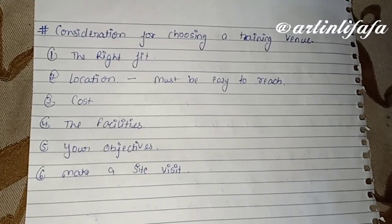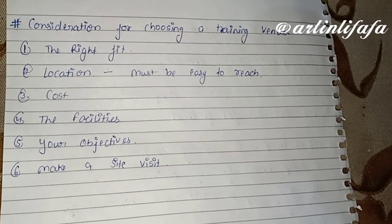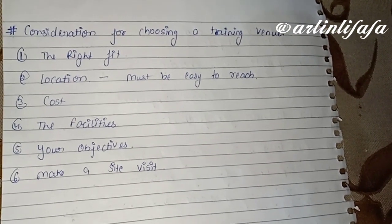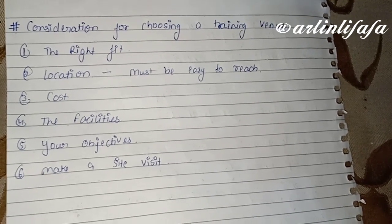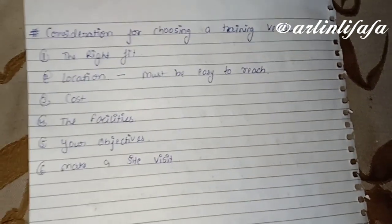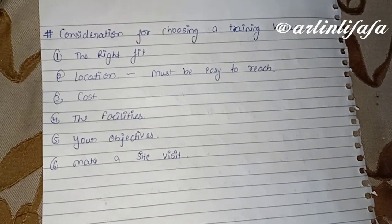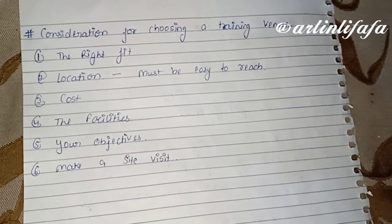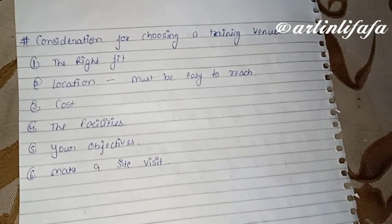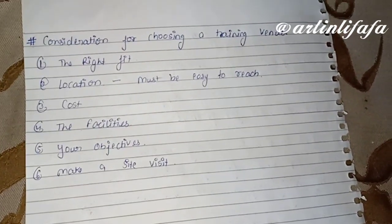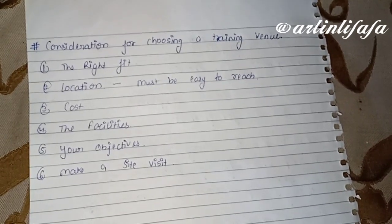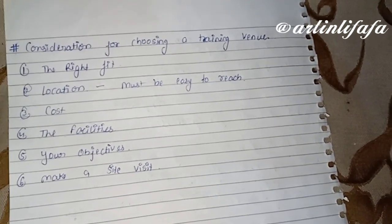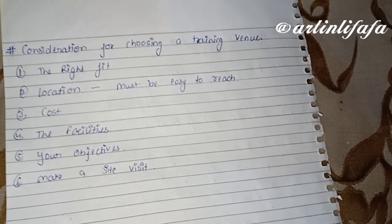Next topic is consideration for choosing a training venue। Training venue के लिए क्या-क्या होना चाहिए: a right fit — मतलब जितने लोग हैं सारे उस location पे easily available हो सकें, seating सही हो। Location most important — ऐसी location होनी चाहिए जहाँ employees और trainees easily पहुँच सकें। Cost बहुत ज़्यादा न आए।